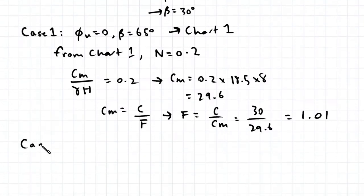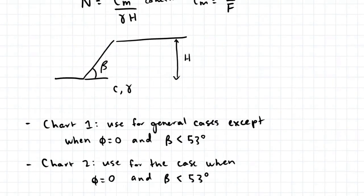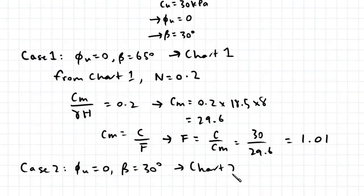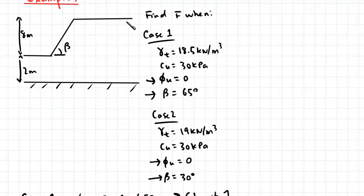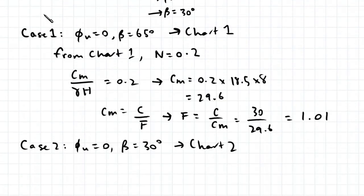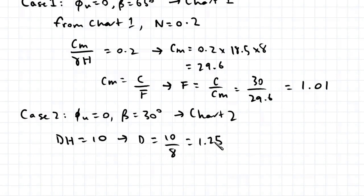Let's now look at case two. For case two, phi_u is equal to zero and beta is equal to 30 degrees. We can use chart two because phi_u equals zero and the slope angle is less than 53 degrees. The depth DH is 10 meters — that's the depth to the bottom surface. So DH equals 10, and because H equals 8 meters, we can solve for D, which is 1.25.